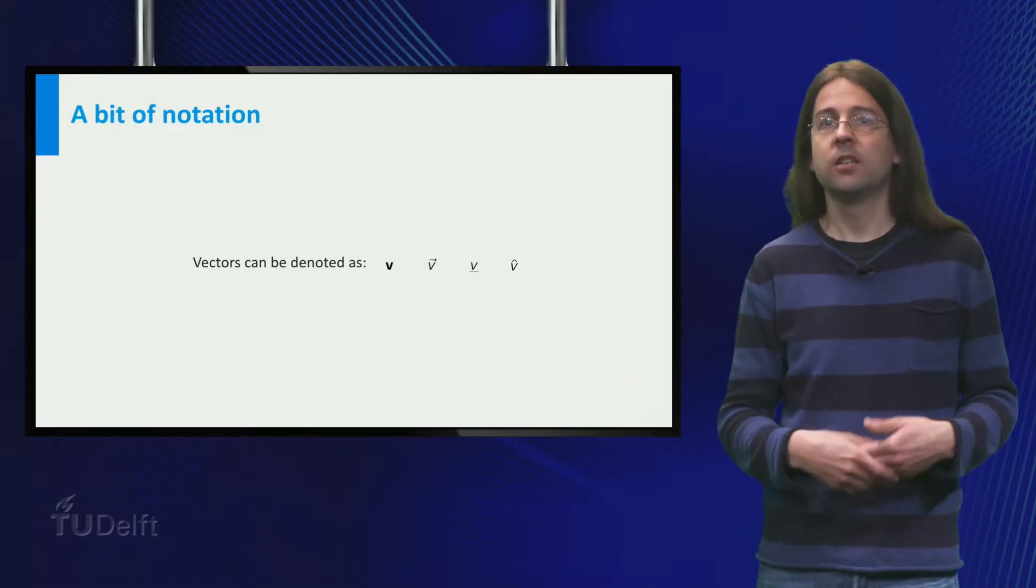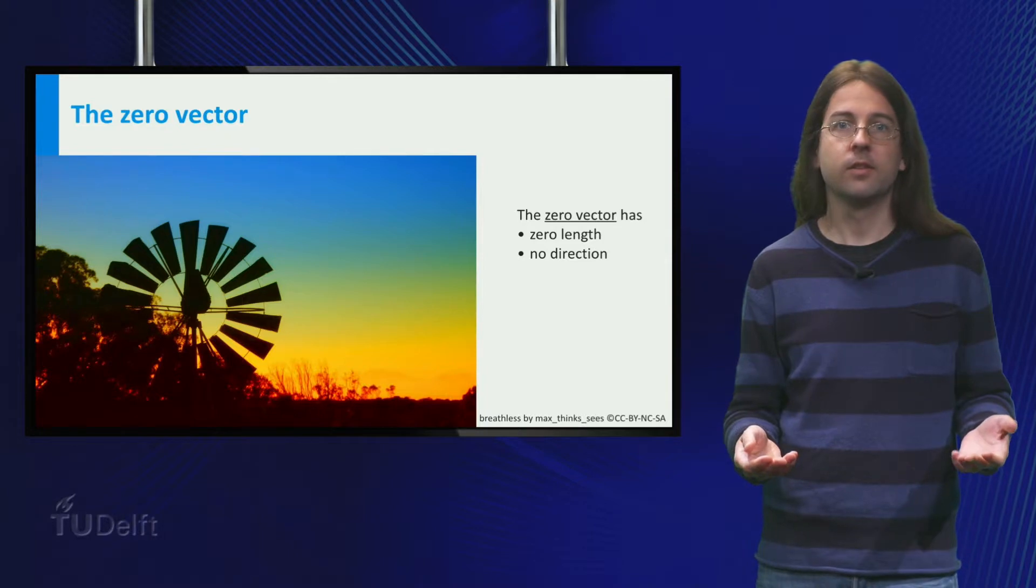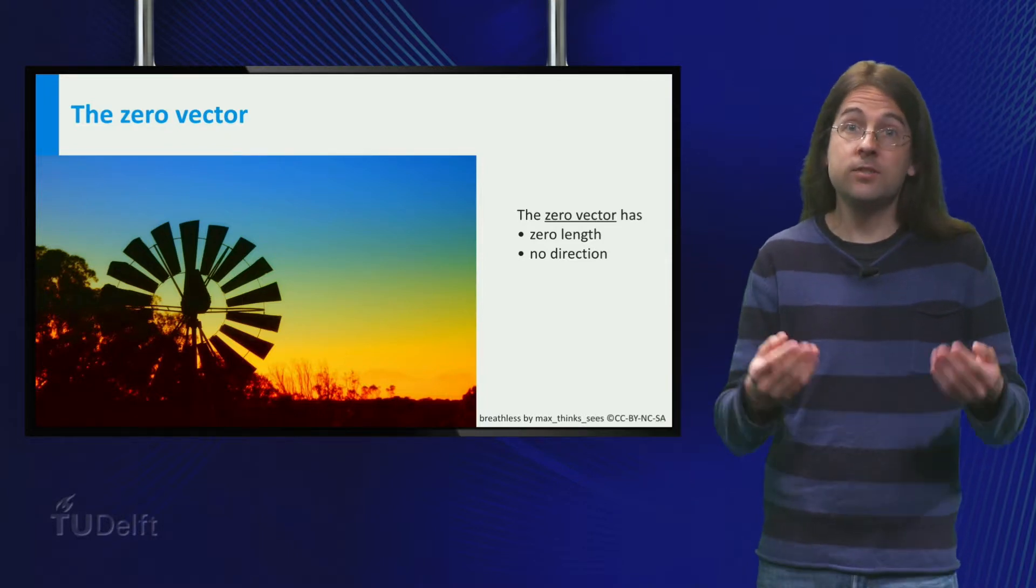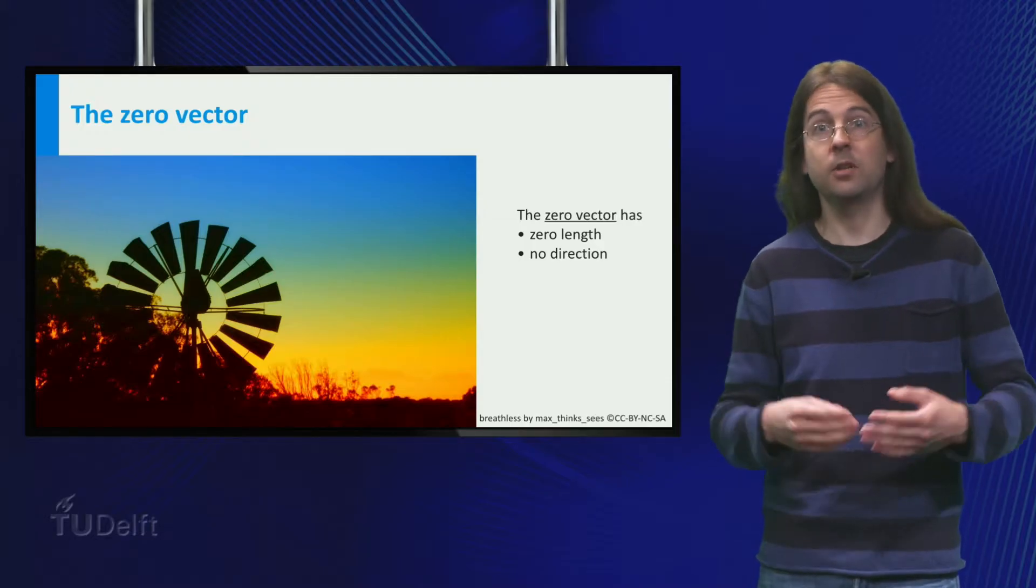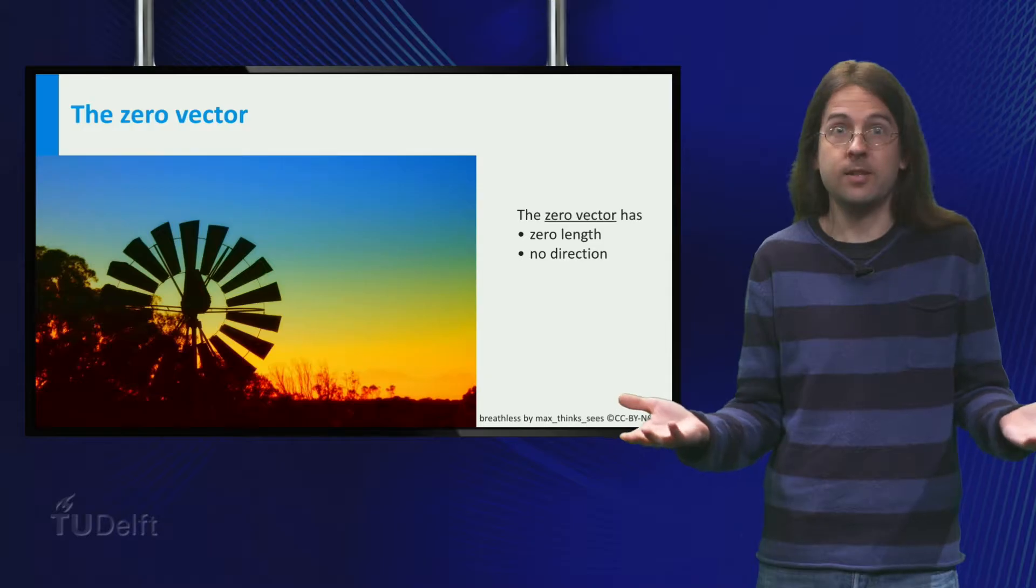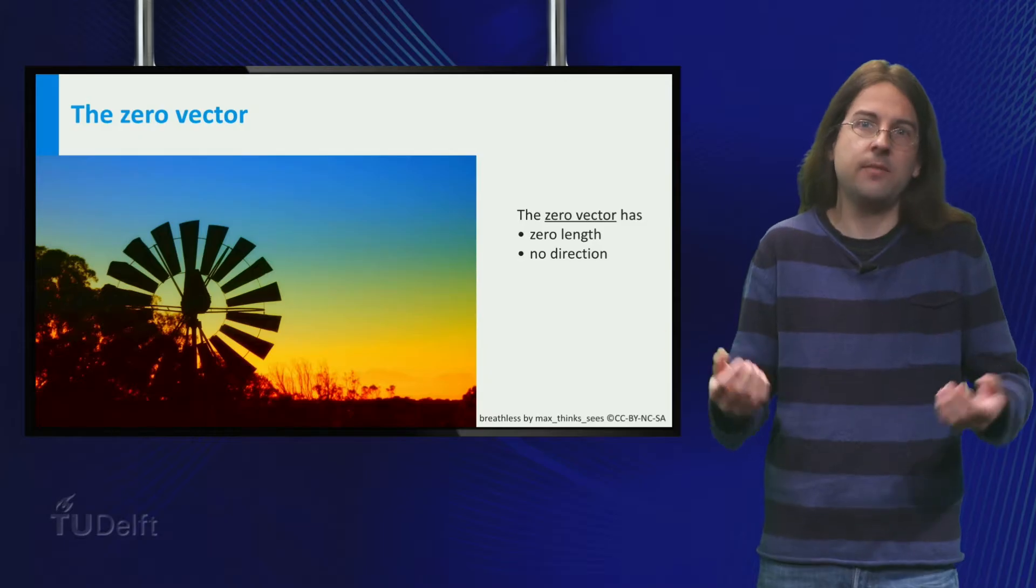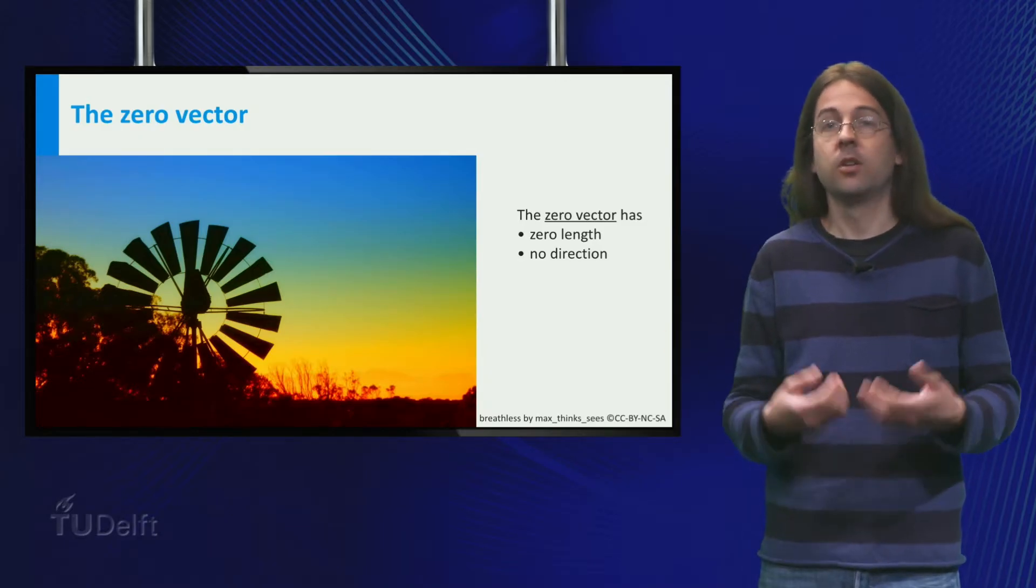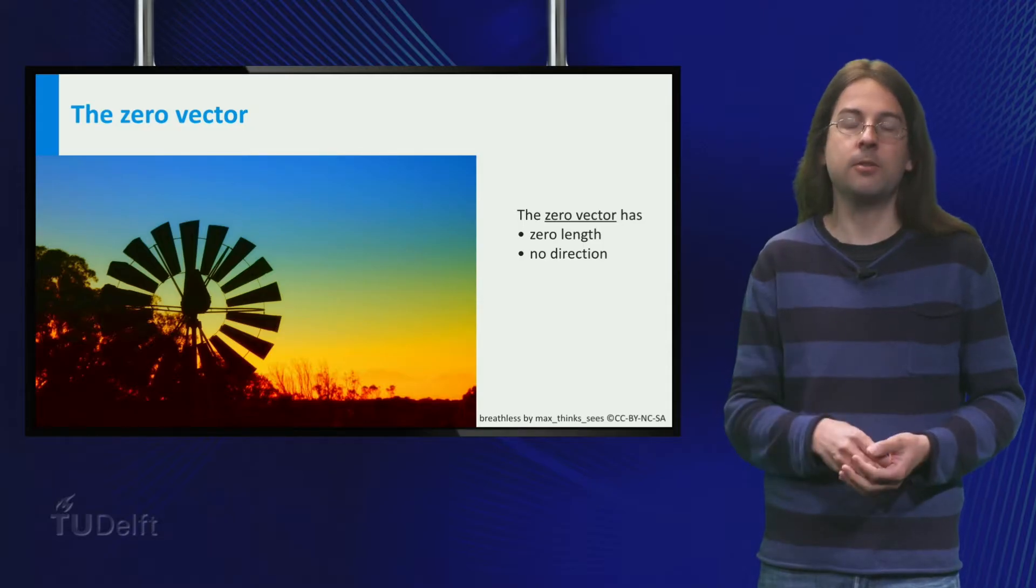Sometimes when you are sailing the boat is lying dead in the water because there is no wind. On a windless day we still want to describe the wind using a vector. The length of this vector is clear, should be zero. But what is its direction? Well, if there is no wind, it does not have a direction either. So the wind is blowing along a vector of length zero and without a direction.